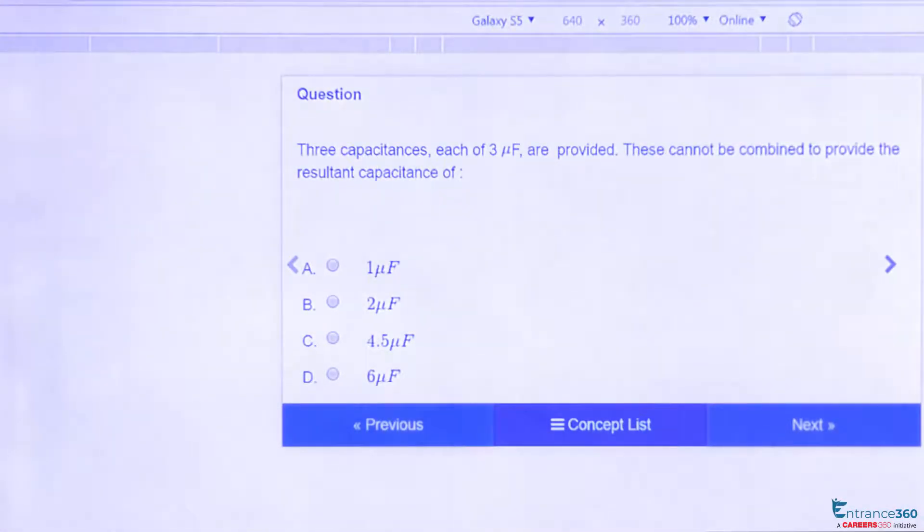Hello students, this is an easy question from chapter Electrostatics which is asked in JEE Main 2014. The question says that we have three 3 μF capacitances, so by combination of these three capacitances, which of the following cannot be obtained?